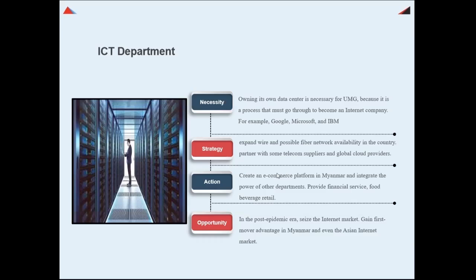With the support of the data center, UMG can provide more services such as internet and network services, hosting services, fiber optics, radio towers, payment gateways, smart cities, cloud services, television services, security solutions, and other solutions. In the post-epidemic era, we can seize the internet market and gain first-mover advantage in Myanmar and even the Asia international market.